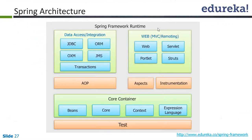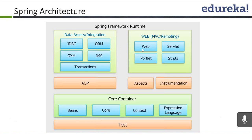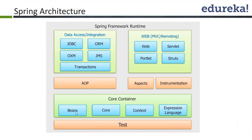This is what we call Spring architecture. On a higher level, it is the Spring Framework runtime, which contains different modules. Some modules pertain to data access and integration, others to web MVC and remoting. The core container consists of these modules: Beans, Core, Context, and Expression Language. In our first example, we'll be dealing with these three modules: Beans, Core, and Context.